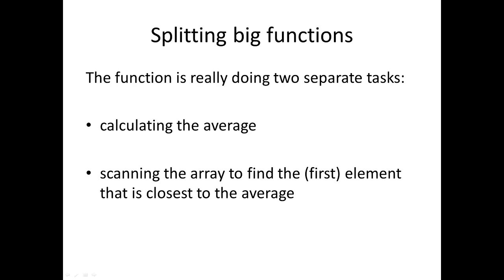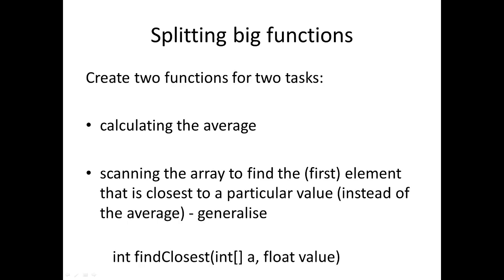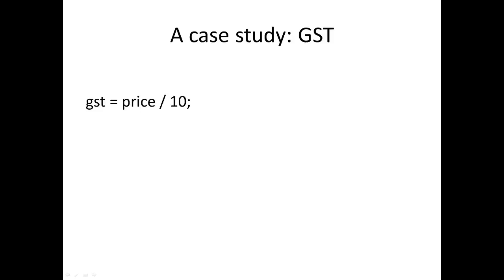So what we can do is basically split this into two functions to capture those two different things that it's doing. So the first part we can create a function that calculates an average. Then the second part we can say let's find in an array the first element that's closest to a particular value. Previously we were looking for closest to the average, but let's just generalize it slightly and say closest to a particular value. And now we can just reduce that down to two functions and we can go back and change where that's getting used.